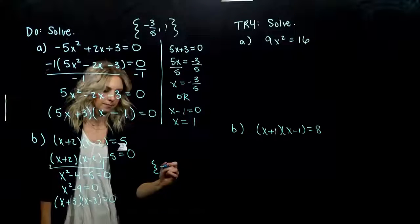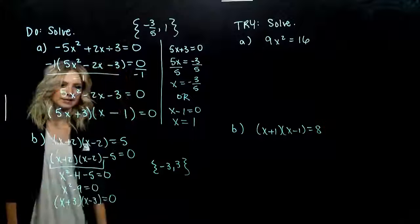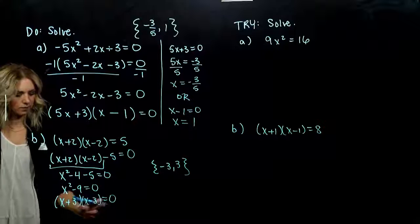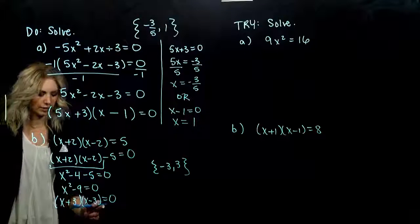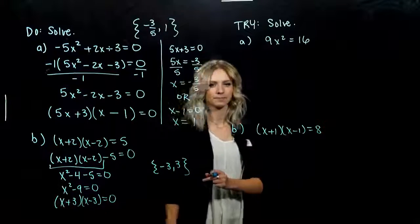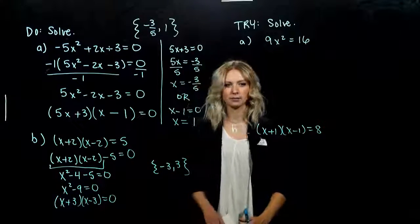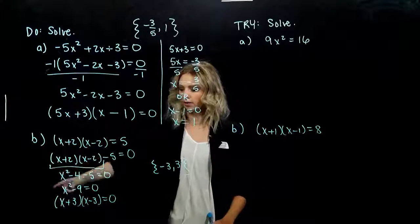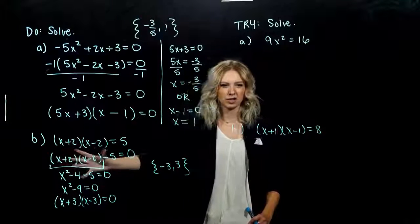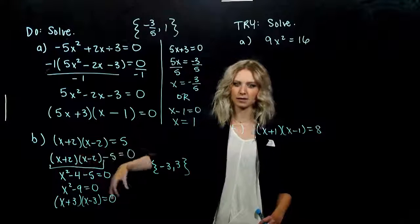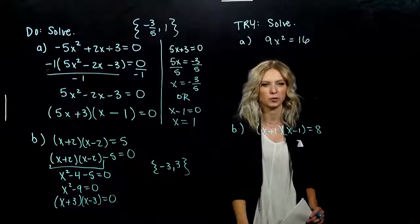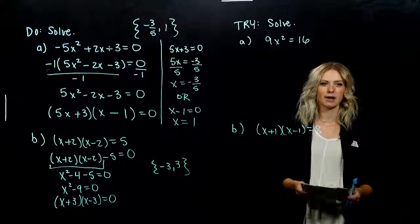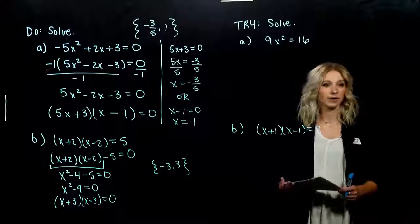So x equals negative 3 or positive 3. The key steps are: get everything on one side set equal to 0, make sure the coefficient on x squared is positive, and make sure there are no extra parentheses or products — it needs to start out as a plain polynomial to factor. Go ahead and try the next two problems.